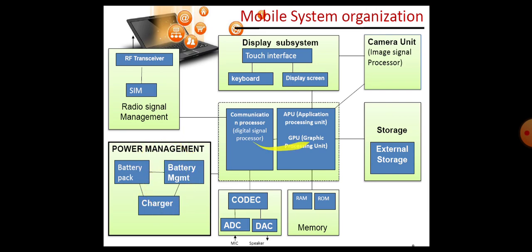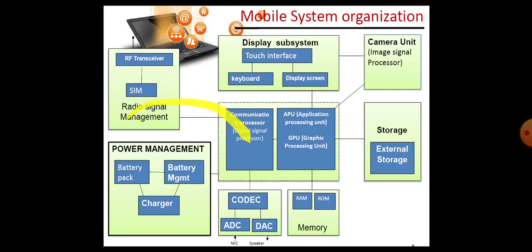The two main things — that is, communication processor and APU — GPU are connected together. Communication processor is again connected with radio signal management and coding and decoding.